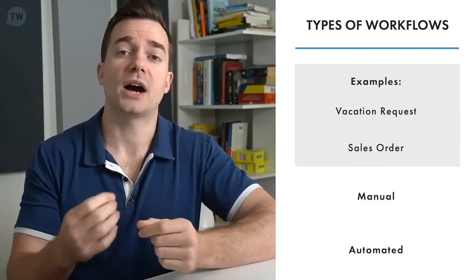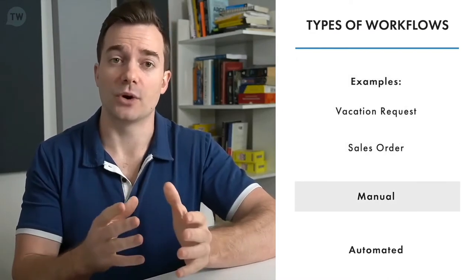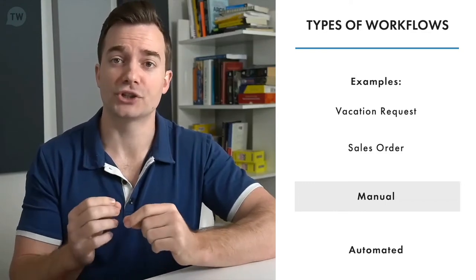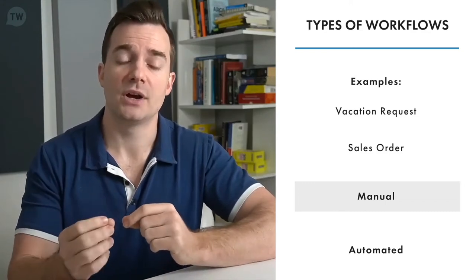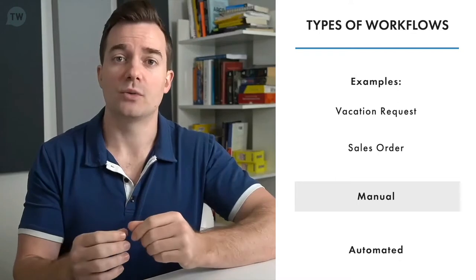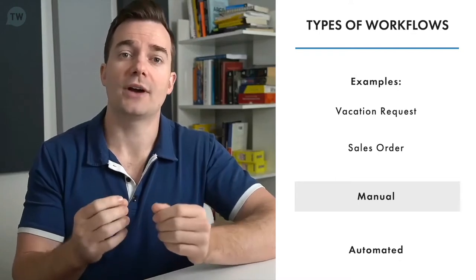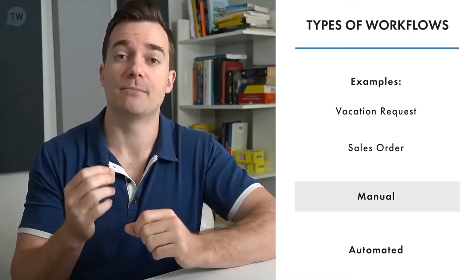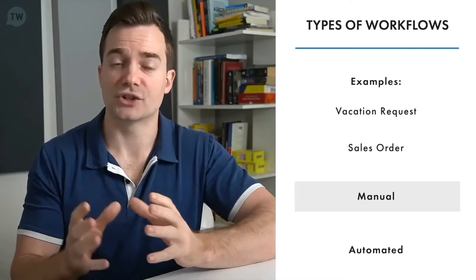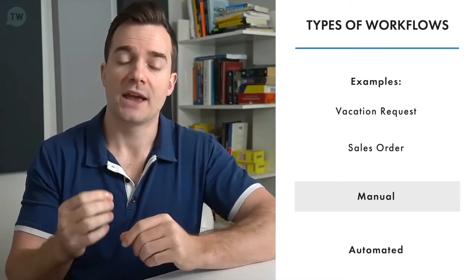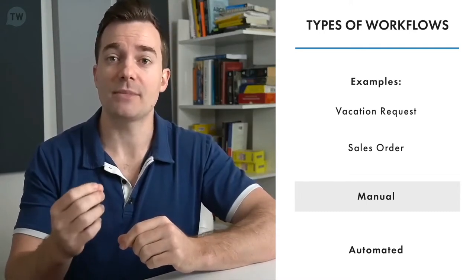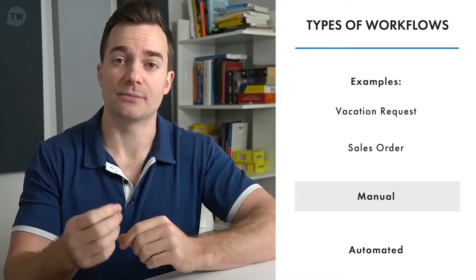There are two types of workflows. The first is manual. In a manual workflow, a human is responsible for pushing each item from one task to another. For example, when filling out a reimbursement claim, an employee has to manually take or email the form to the manager for approval. After approval, the employee must take it manually or email it to the finance department.